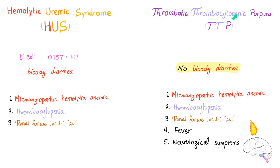Hemolytic uremic syndrome versus TTP. Hemolytic uremic syndrome was related to E. coli O157:H7 — this is an EHEC. The E. coli will lead to bloody diarrhea, and we have a triad of microangiopathic hemolytic anemia, thrombocytopenia, and renal failure.